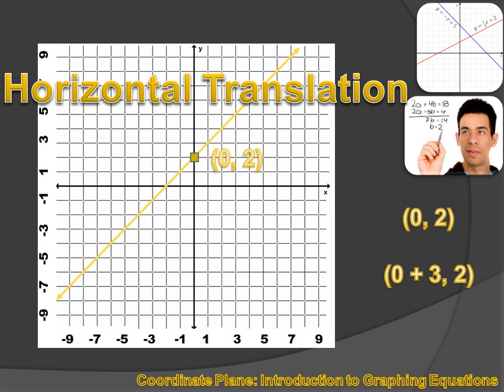Let's say we wanted to slide that 3 to the right. We'd want to add 3 to our x value. So, our point would no longer be 0, 2. It would be 0 plus 3, 2 or 3, 2. And that line would slide over three places to the right so that our x value is no longer 0. It was 3. And that point would be at 3, 2.